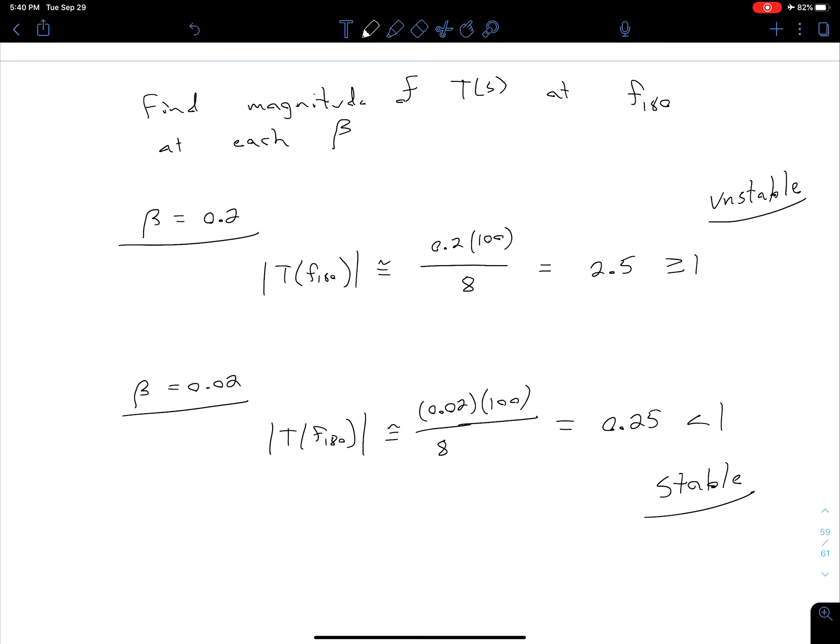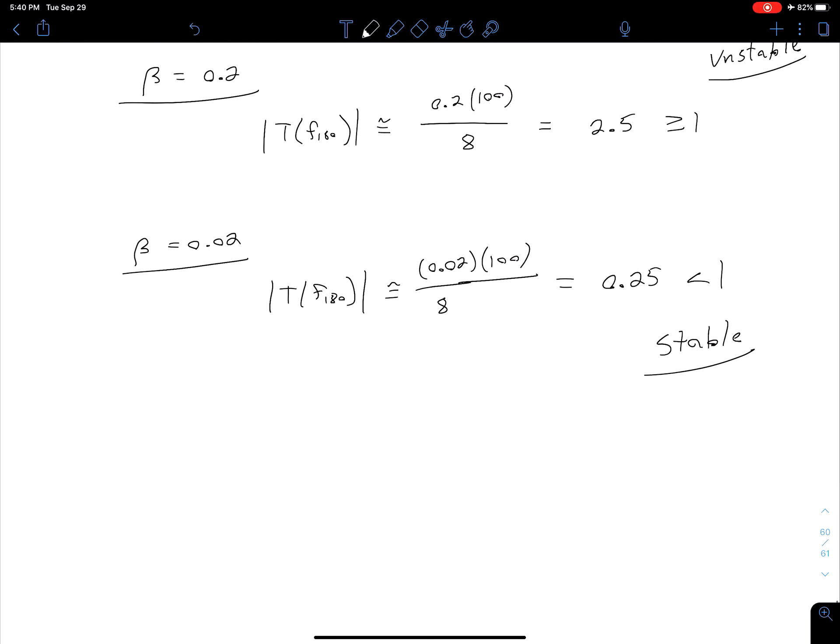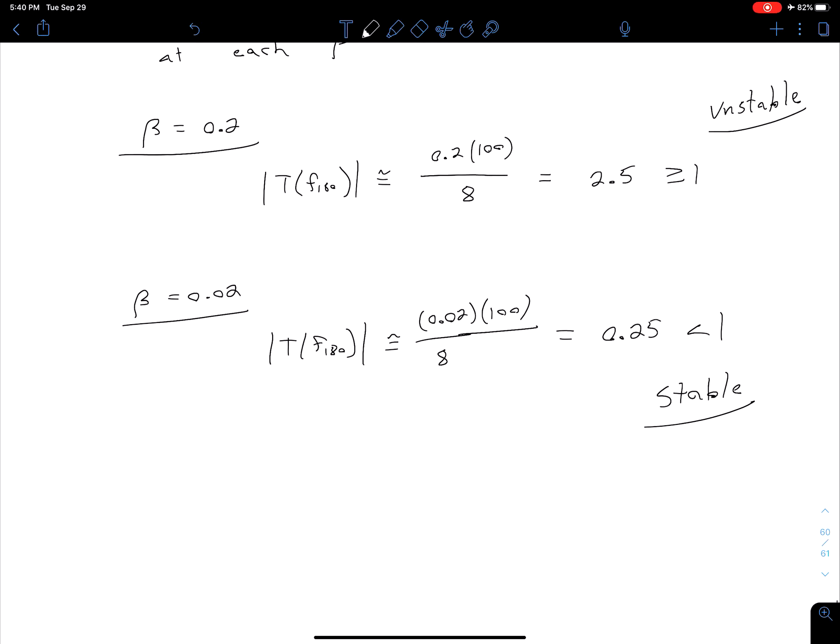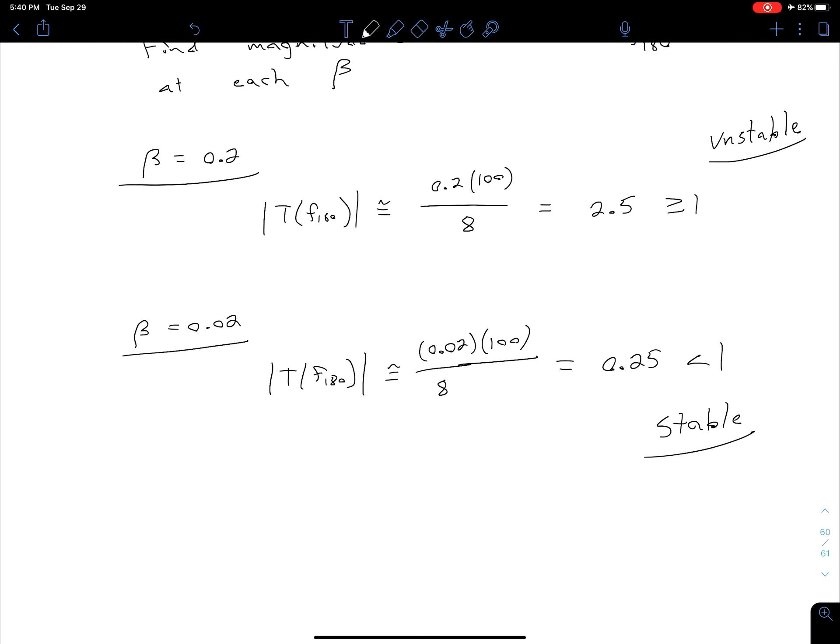So one note here too, it looks like if you use the exact value of our 180 degree frequency you do get that value coming out to eight. So now we've seen a basic example, what we're going to do in our next few videos is come back to those Bode plots and we're going to see how we can quantify our stability and then ultimately what we're going to look at is how we can improve our stability for a particular system.